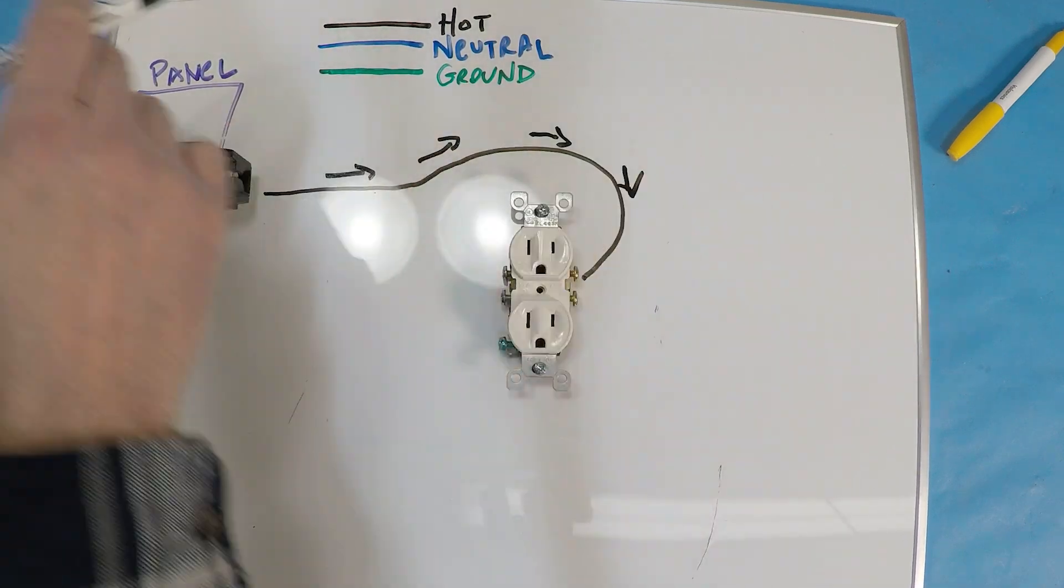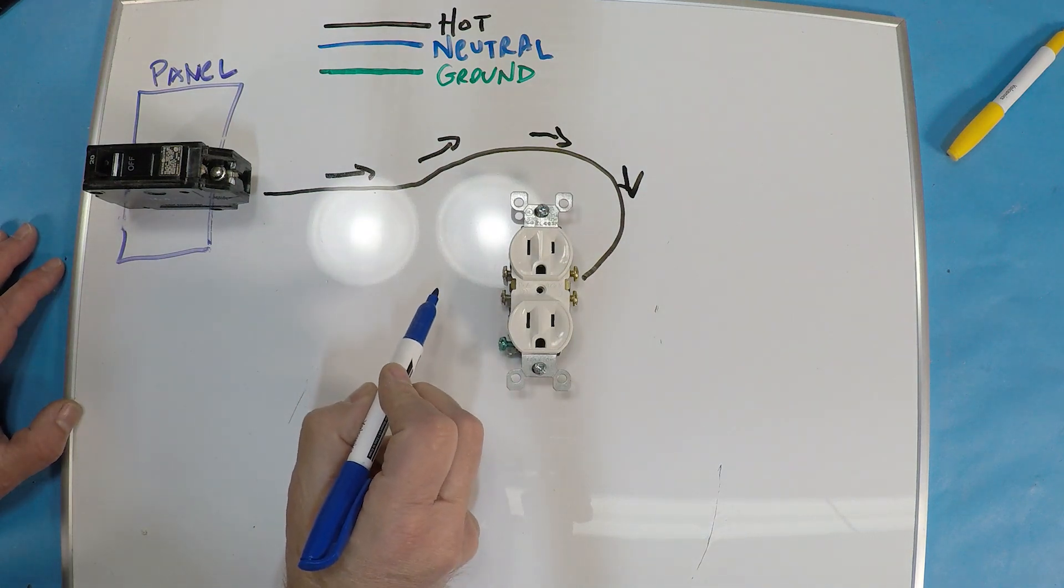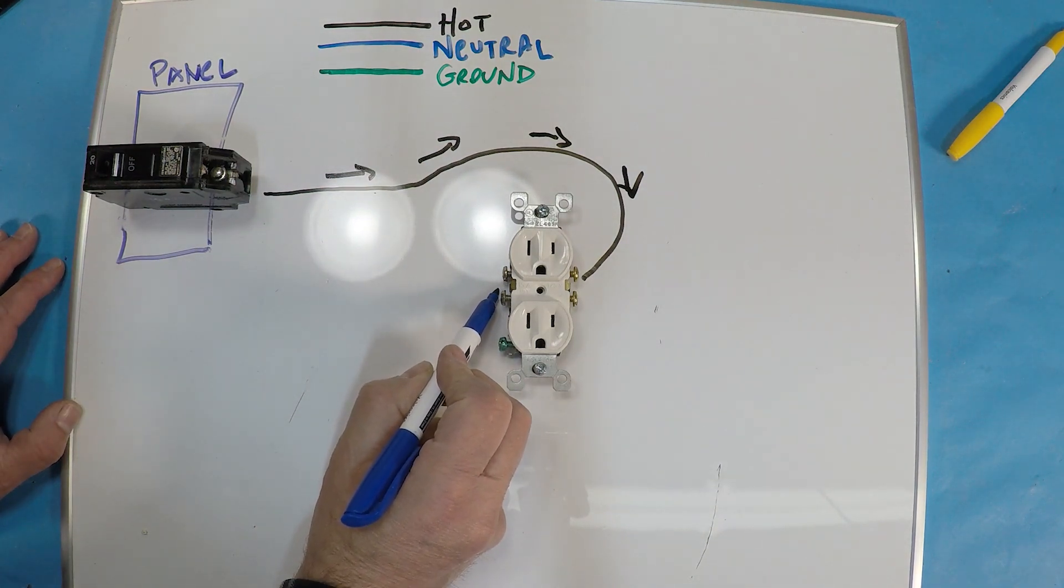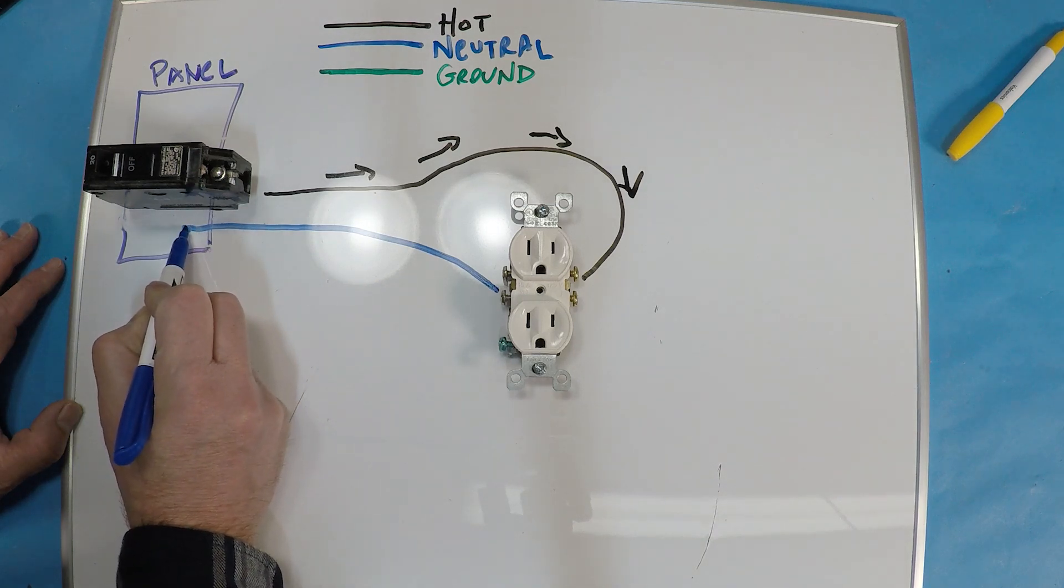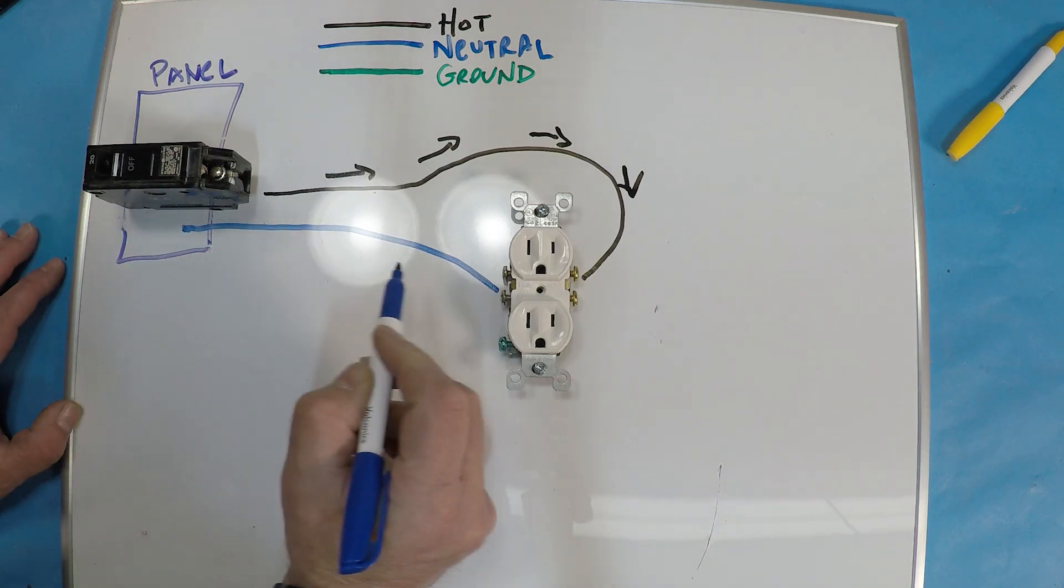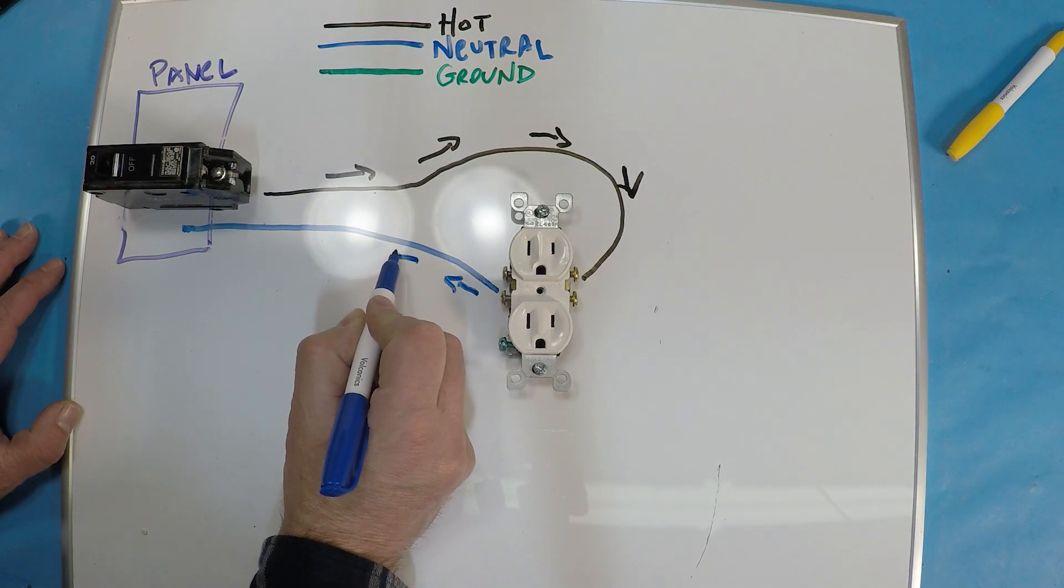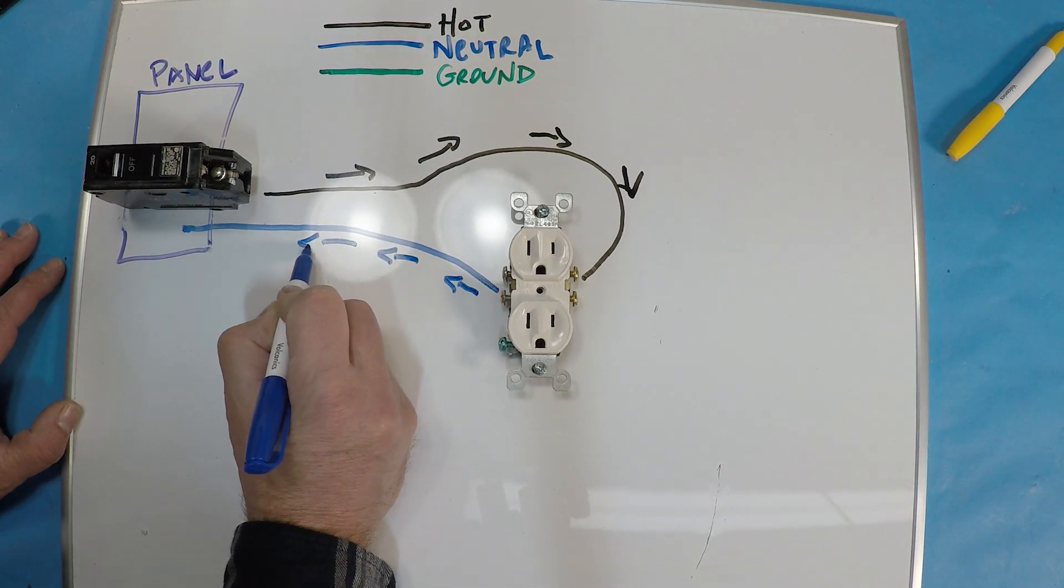And then you've got your neutral coming off of the silver screw and it's going back and attaching to one of the neutral bus bars inside the panel, and you're completing the circuit.